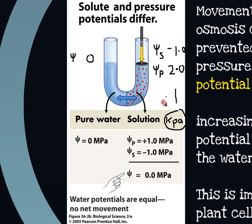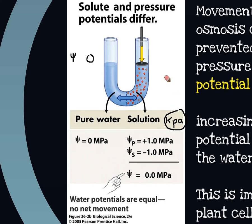So water potentials, if we're not talking about a physical pressure being applied, tend to be zero for pure water. This is the one case where solute potential and water potential won't have the same value, because the water potential is a combination of the solute potential — which is always negative — plus the pressure potential, which is always positive. If we've got a semipermeable membrane and we apply a pressure potential, that will have a positive effect on the water potential.